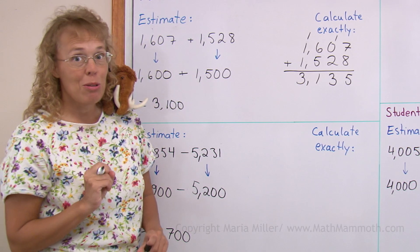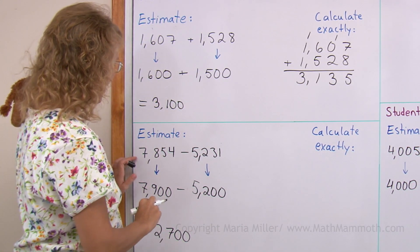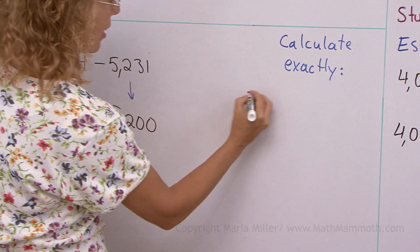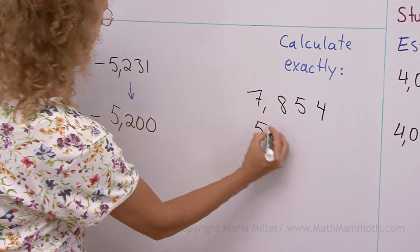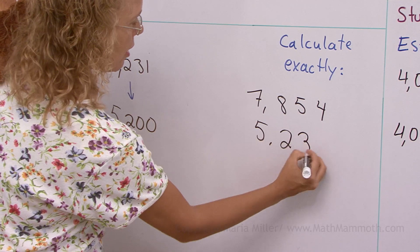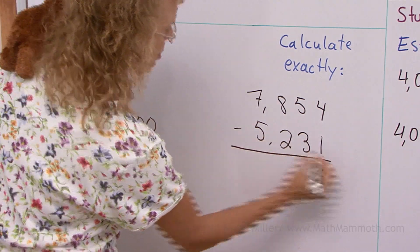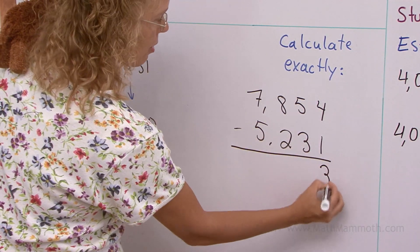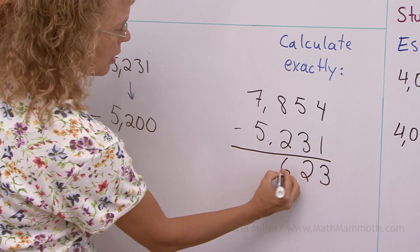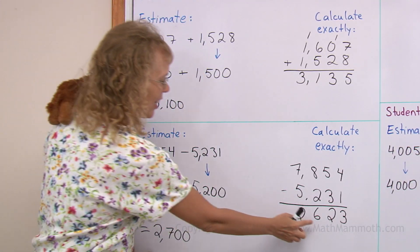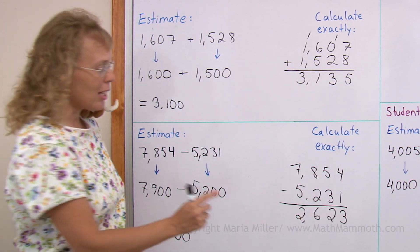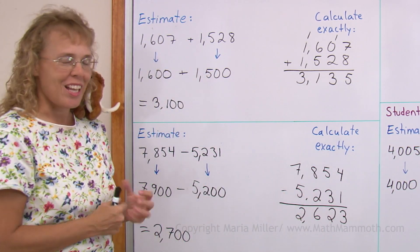And now I will also calculate exactly, taking these numbers, 7,854, 5,231. Again, you can see that the estimate is quite close to the actual real answer.